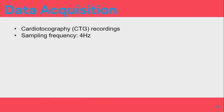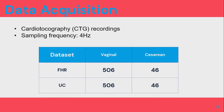For data acquisition, we used a publicly available dataset from PhysioNet: the CTU-CHB Intrapartum Cardiotocography Database. The CTG recordings were from 552 mothers who were pregnant with a singleton pregnancy and had completed 36 weeks of gestation. The sampling rate is 4 Hz, and the signal was acquired 90 minutes before the actual delivery. The database contains 506 signals from the vaginal class and 46 from the caesarean class, covering both the fetal heart rate (FHR) and uterine contractions.